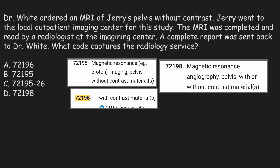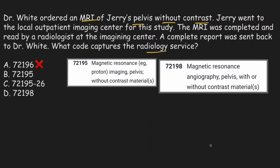Dr. White ordered an MRI of Jerry's pelvis without contrast. Jerry went to the local outpatient imaging center for this study. The MRI was completed and read by the radiologist at the imaging center. A complete report was sent back to Dr. White. Which code captures the radiology service? We'll eliminate option A because that code is for with contrast, but the question specifies without contrast. We'll also eliminate option D because that is for magnetic resonance angiography, not magnetic resonance imaging.